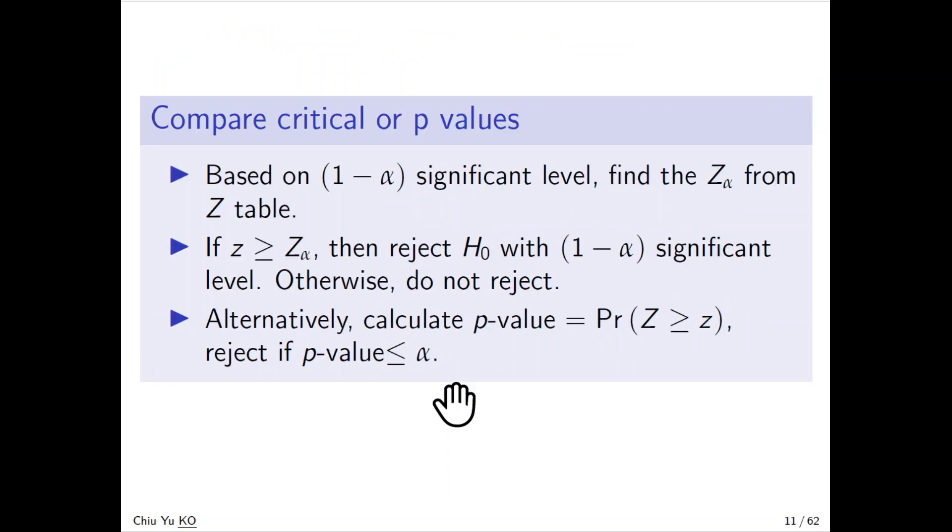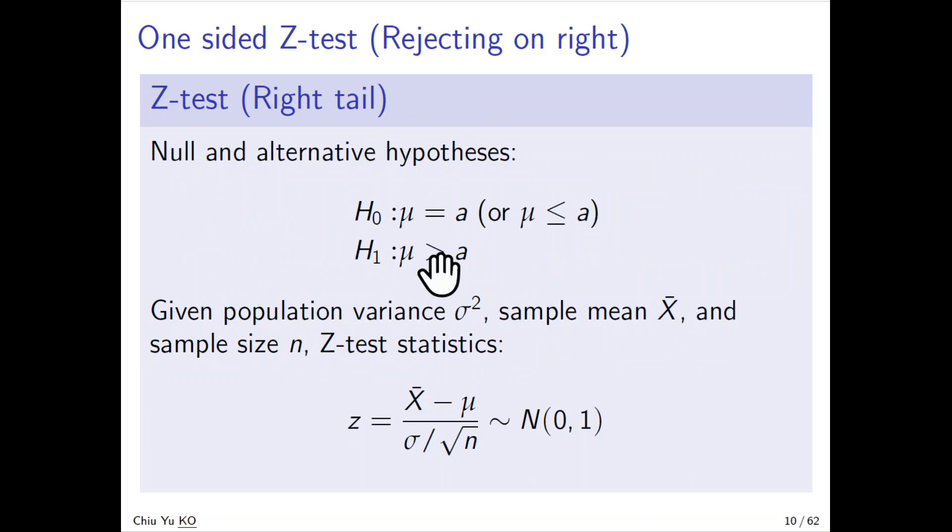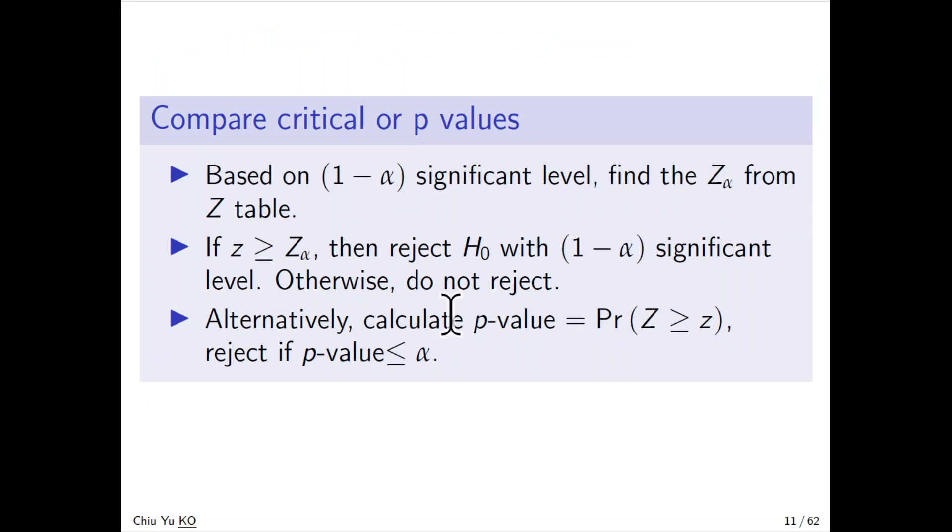What we're going to do is either use the critical value or the p-value. Based on (1-α) significance level, find z_α from the Z table. If z ≥ z_α, then reject the null hypothesis because if it's too large, then you reject. Alternatively, calculate the p-value = P(Z ≥ z); reject if p-value ≤ α.